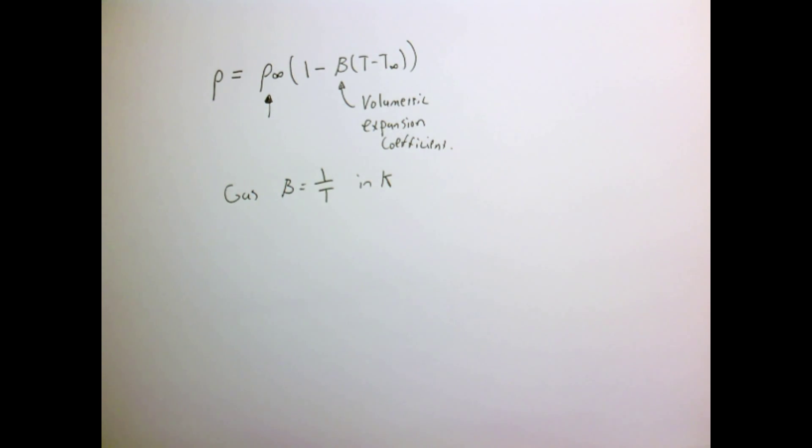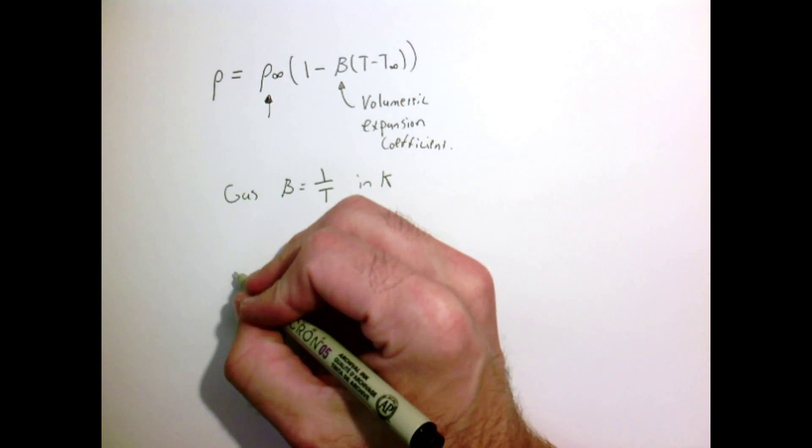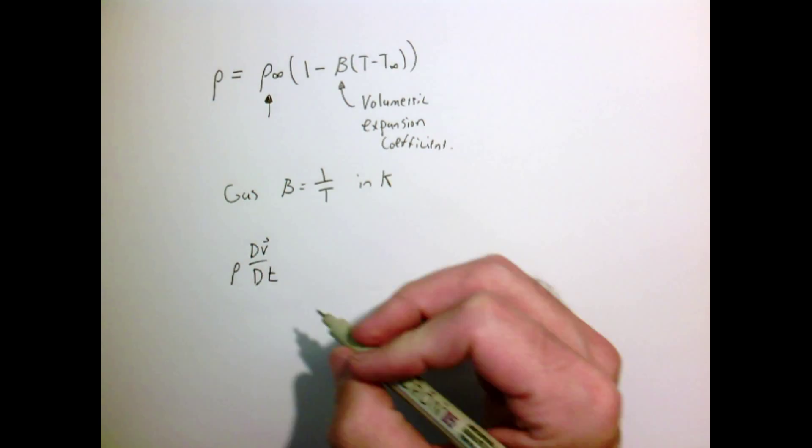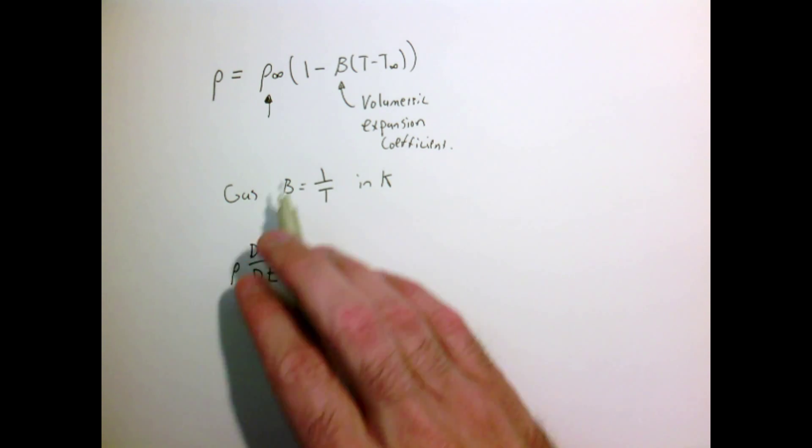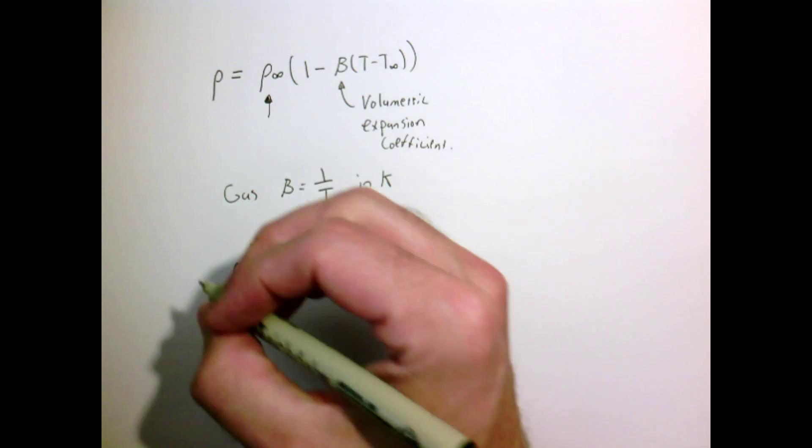Now we have this complicated thing. If you remember, all of our terms like in our momentum equation have terms that look like this, where we have the density multiplied by the acceleration dv/dt, the material derivative of the velocity. If this density depends on temperature, now we have something that's kind of more complicated.